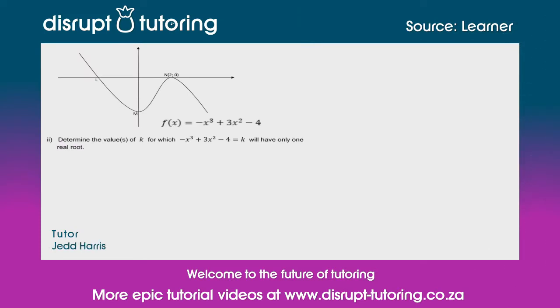Hey peeps, it's Jed here from Disrupt Tutoring. As always, such a pleasure to join you. Today we're going to deal with a cubic function, specifically looking for the values of k which would allow for a function to have only one real root. This question was kindly sent in by Lumkile. So they've given us this curve.